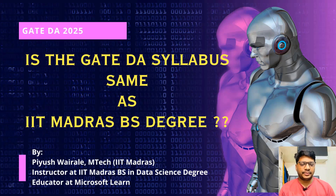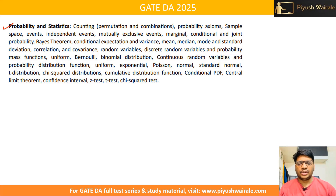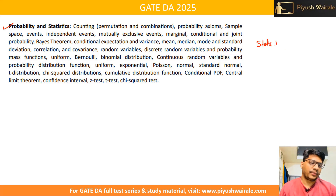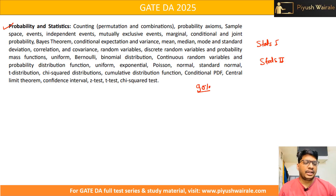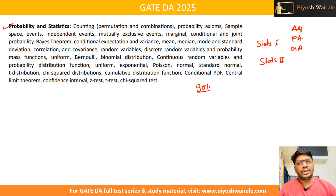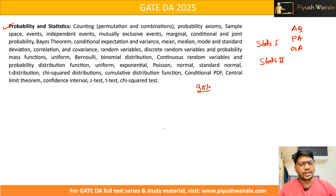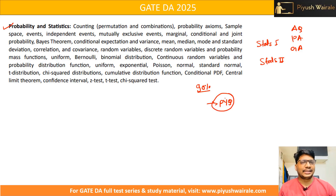Starting with Probability and Statistics: almost every topic in the GATE DA syllabus is covered in the Stats 1 and Stats 2 courses at IITM BS degree — roughly 90% of the syllabus. You can go through the content, solve activity questions, practice assignment questions, and grade assignment questions. However, the type of questions GATE asks is a bit different from assignment questions, so you also need to go through previous year questions from GATE Mechanical, CSE, and Electronics branches for these topics.